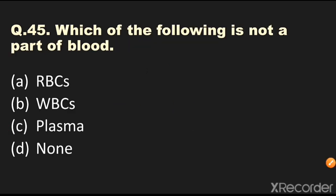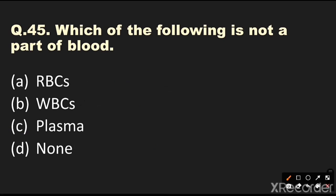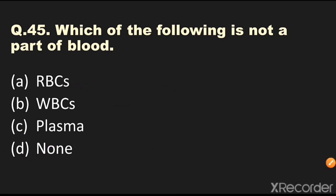Question number 45: Which of the following is not a part of blood? Options are RBCs, WBCs, plasma, or none. The answer is none — RBCs, WBCs, and plasma are all three parts of blood.